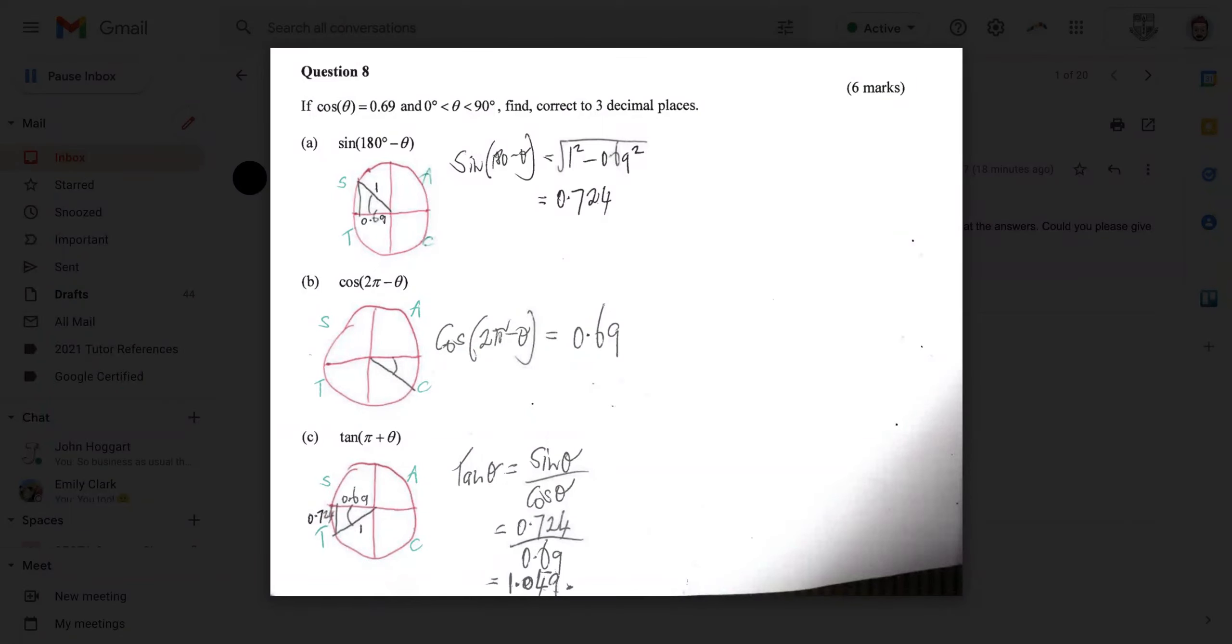And it's going to be positive sine theta because it's in this quadrant here. If it ended up in one of these quadrants and it was sine, then we would say it's equal to negative. Okay, so we've got that first of all. We've got it equal to sine theta.